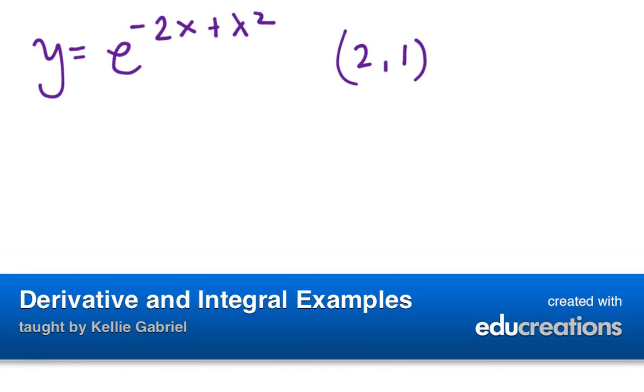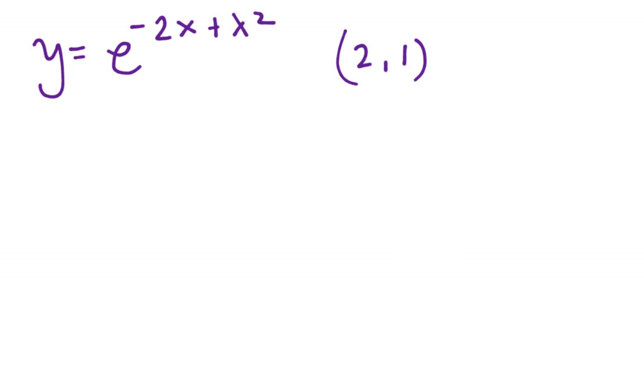Here's an example. We're going to find the tangent line to the equation given at the point (2,1). This is found on page 357, number 50.